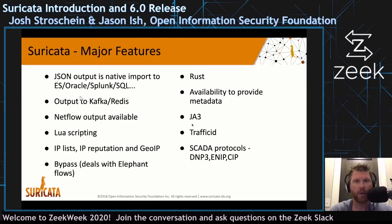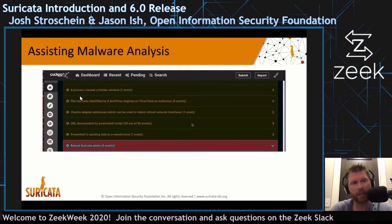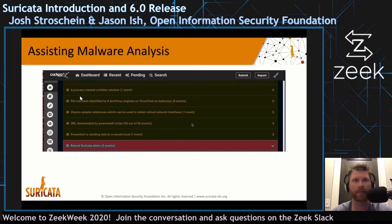Some other major features: Lua scripting is available. You can also integrate IP reputation lists and GeoIP information. JA3 and JA3S support. A lot of new code is being written and some older code is being ported to Rust. There are also some SCADA protocols. A lot of public sandboxes, like any.run, also use an IDS to generate alerts — it becomes a very important part of malware analysis, getting that extra information about traffic without necessarily having to analyze it manually.